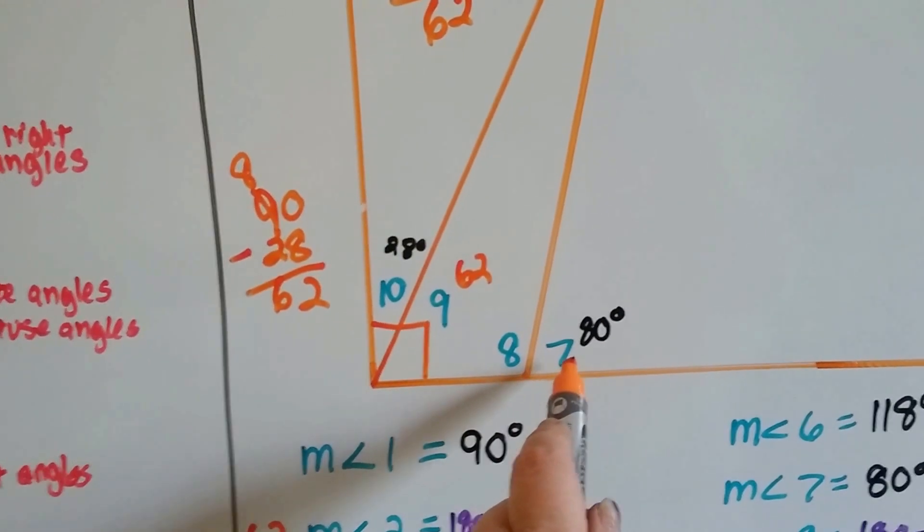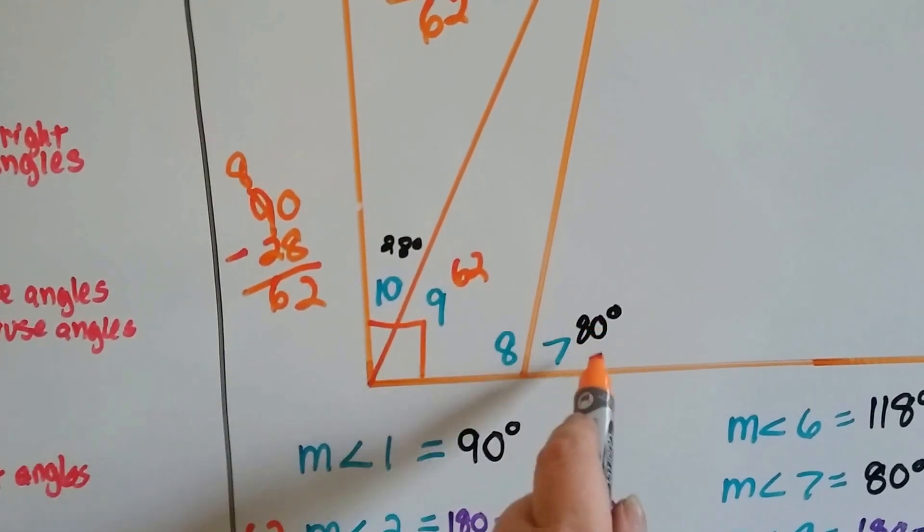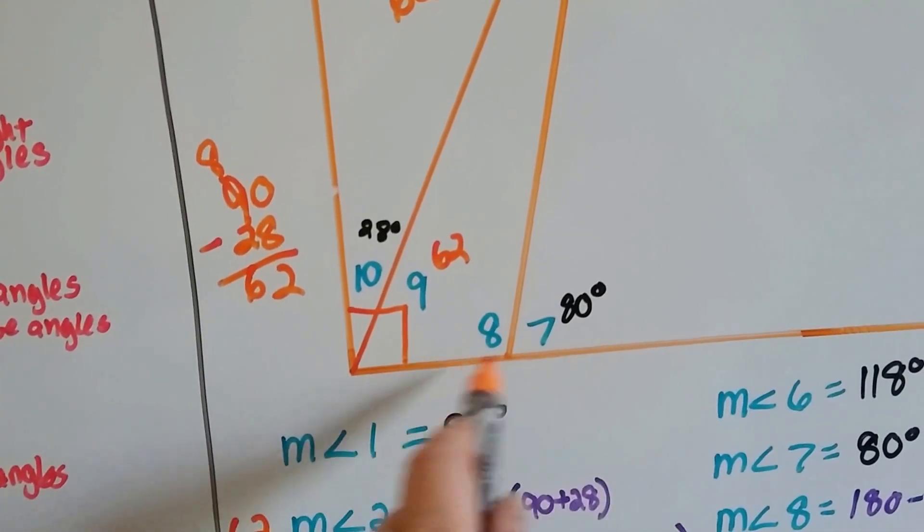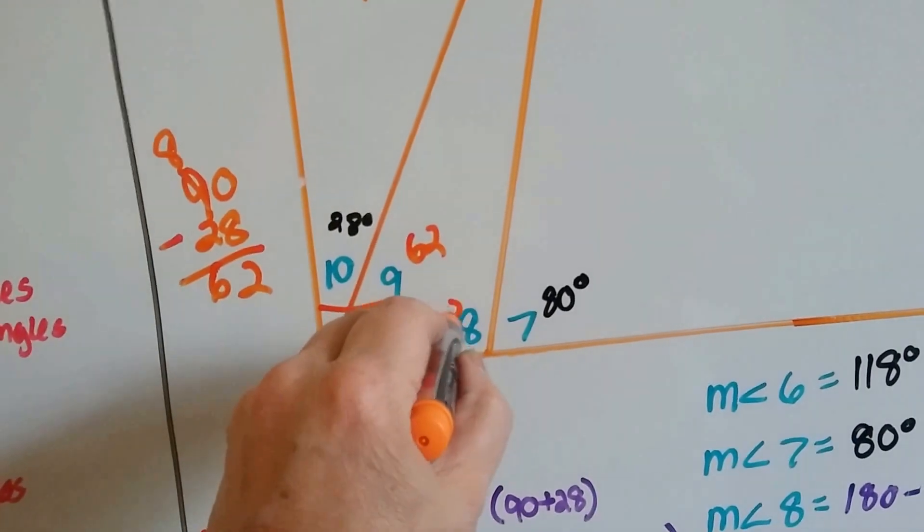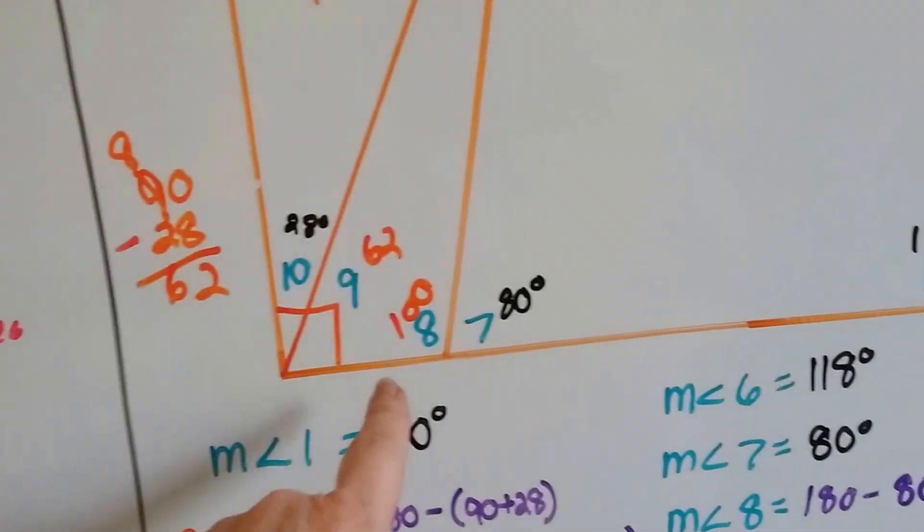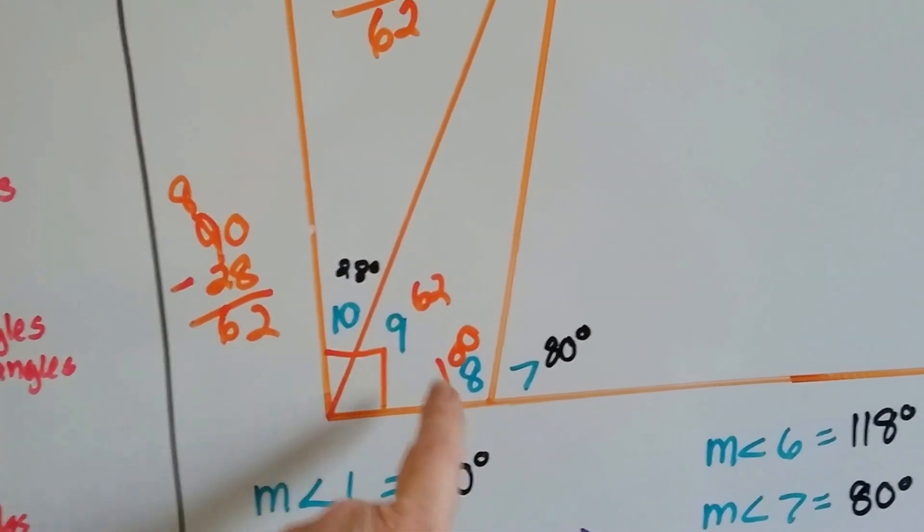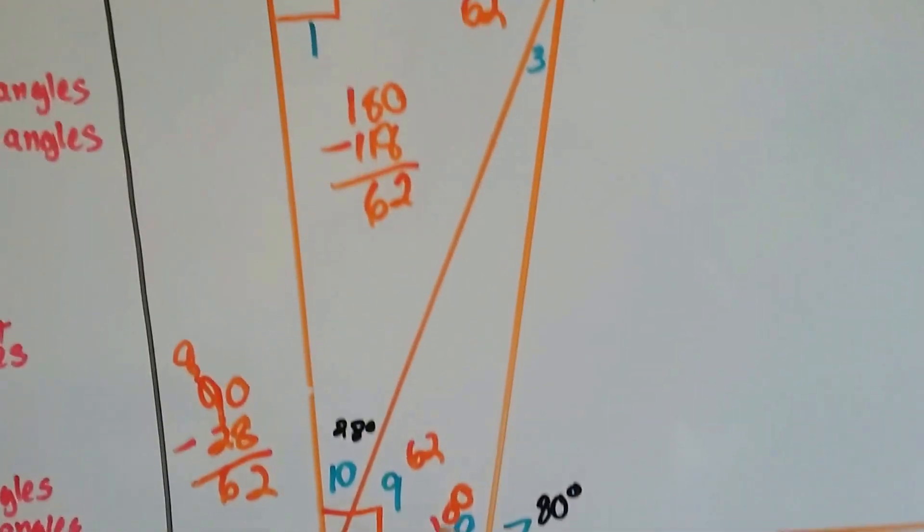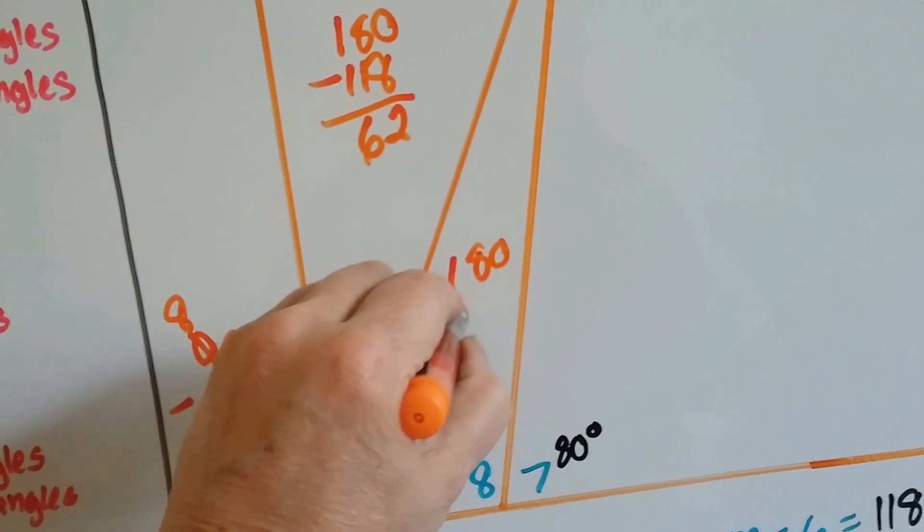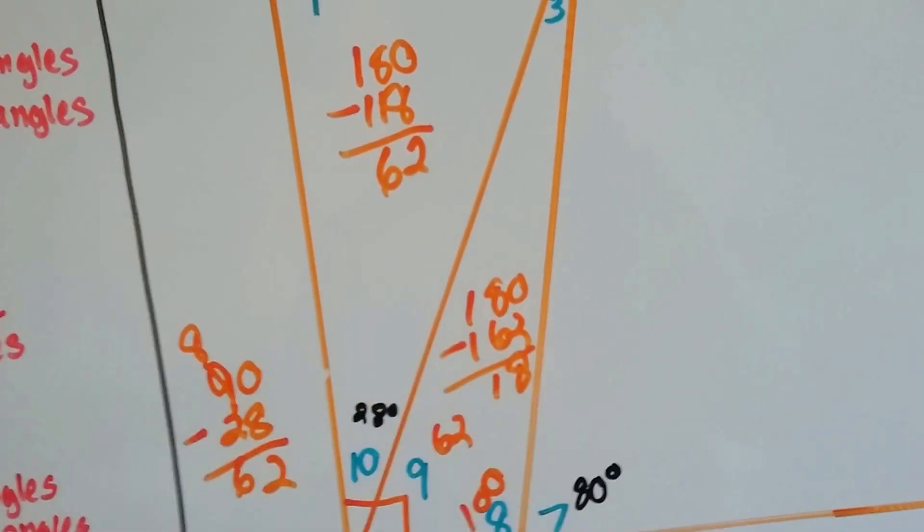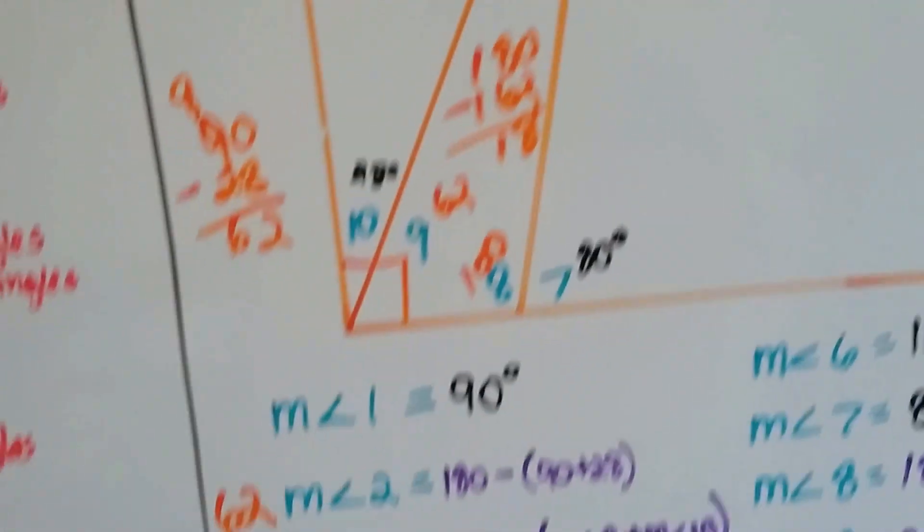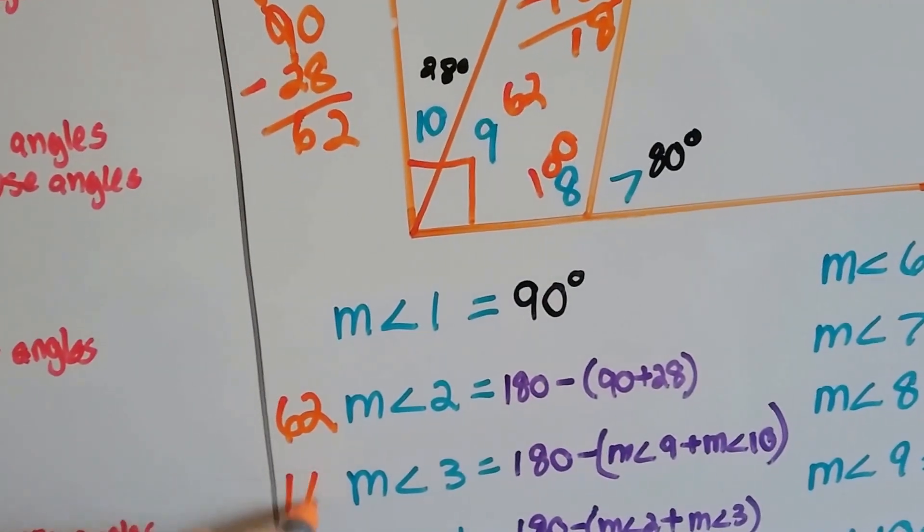So now we've got those measures. Well, if the measure of angle 7 is 80 degrees, and this is a straight line, straight lines are 180 degrees, aren't they? So the measure of angle 8 must be 100 degrees. And if this is 100 degrees, and this is 62 degrees, that's 162. So what must the measure of angle 3 be? It's 18 degrees. See? So we now know the measure of angle 3 is 18.